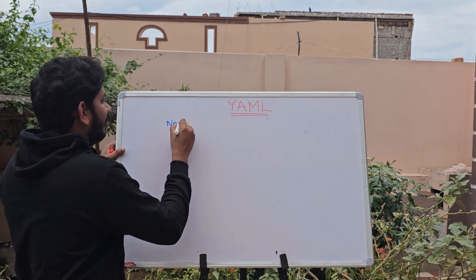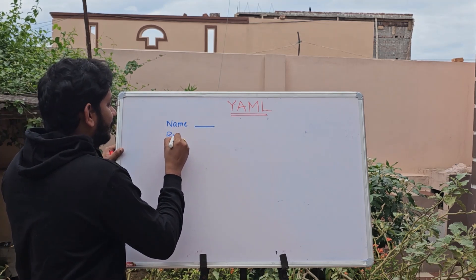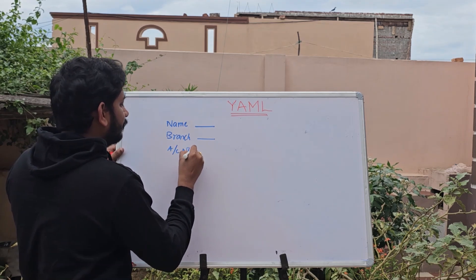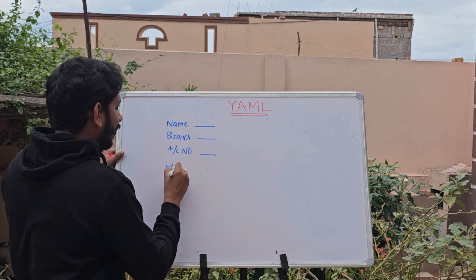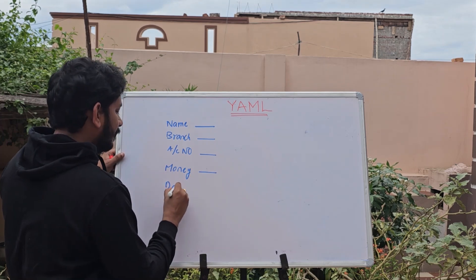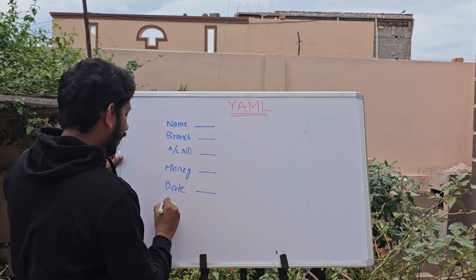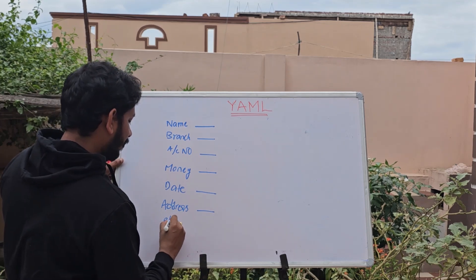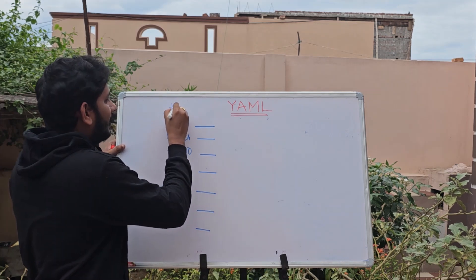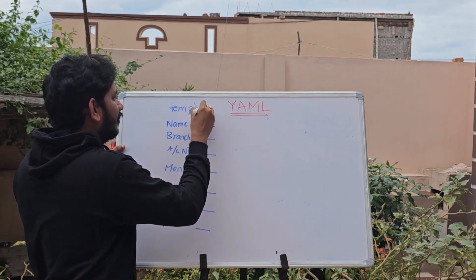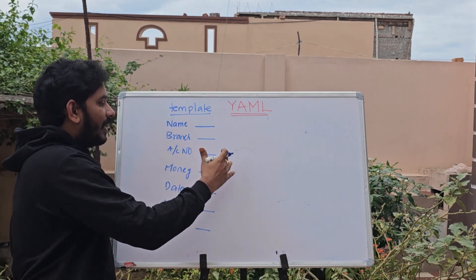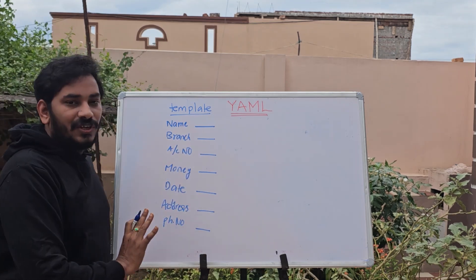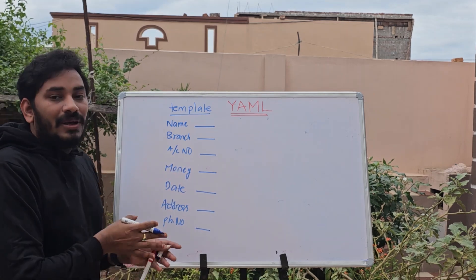You can enter the details of the cache. In the banking system, you can start a template. For example: first name, blank, branch, account number, money, date, address, phone number. This is a template. You can fill it in on paper.